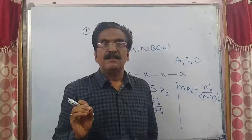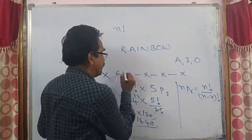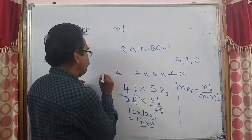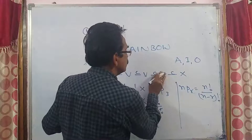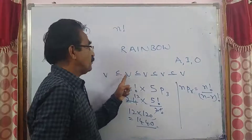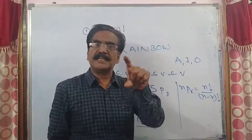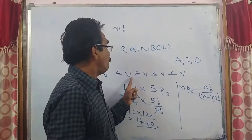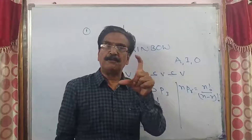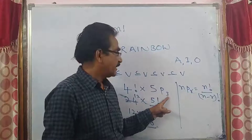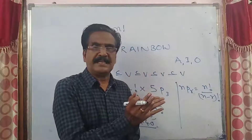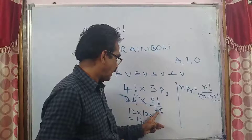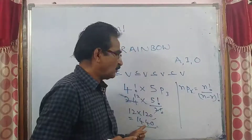To summarize: for no two vowels together, first arrange the four consonants in four factorial ways. Then you have five places available for the three vowels. These three vowels can be arranged in the five available places in 5P3 ways. 5P3 = 5!/2! = 60. So 4! × 5P3 = 24 × 60 = 1440 ways. This is an important problem type.